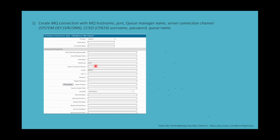If they have multiple queue managers, they will use similar ports like 1415 and 1416. Each queue manager runs on a specific port. The queue manager name is required — the MQ side groups all relevant queues under a specific queue manager, and under that they create many queues. There is also a server connection channel, which defaults to a standard value. The MQ team may customize this and share the details. You fill in queue manager name, hostname, port, server connection name, username, password, and queue name.